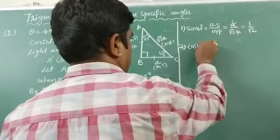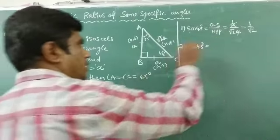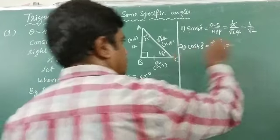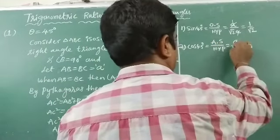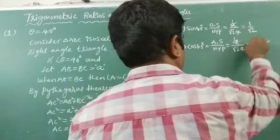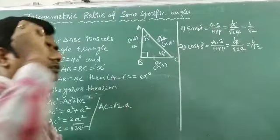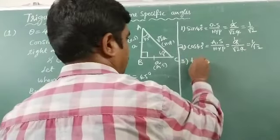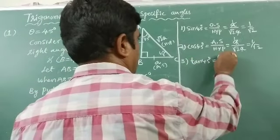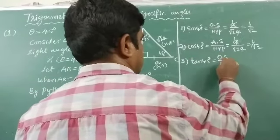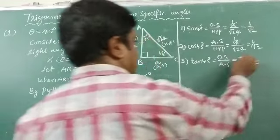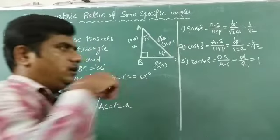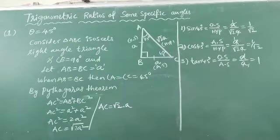Second, cos 45. Cos 45 means the ratio of adjacent side to hypotenuse. The adjacent side length is also a, by hypotenuse √2 · a — the a's cancel — so cos 45 is also 1/√2. Third, tan 45. Tan 45 is the ratio of opposite side to adjacent side. Opposite side is a, adjacent side is also a — they cancel — so tan 45 value is 1.